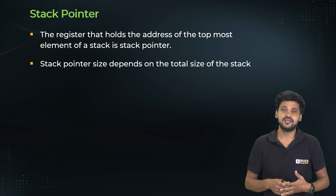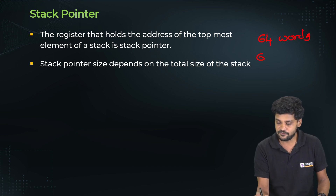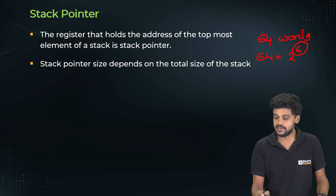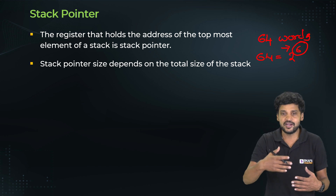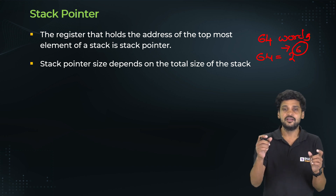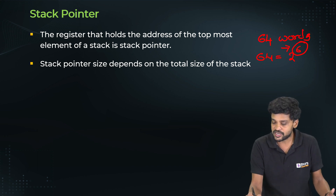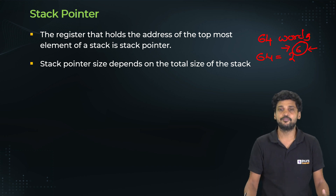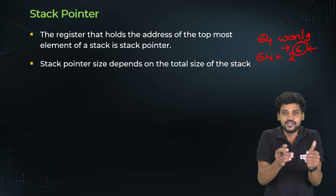Stack pointer size depends on the total stack size. If the stack size is 64 words, then 64 = 2^6, meaning the stack pointer must be 6 bits wide. Using 6 bits, the stack pointer can locate any address within the stack. The length of an address within a 64-word stack is 6 bits, so the stack pointer size equals 6 bits.